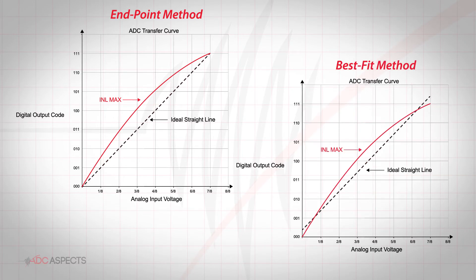For the best fit method, the ideal transfer curve is drawn as a close linear approximation to the actual transfer function of the ADC. Doing so incorporates the ADC's offset and gain errors and results in nearly a 50% lower INL value. So care must be taken when comparing datasheet specs.